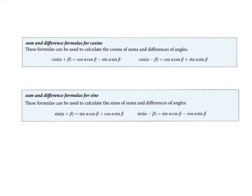We have two formulas that go along with the cosine function. There's the sum formula: cosine of alpha plus beta equals cosine alpha times cosine beta minus sine alpha times sine beta. And then there's a difference identity: cosine of alpha minus beta equals cosine alpha times cosine beta plus sine alpha times sine beta.